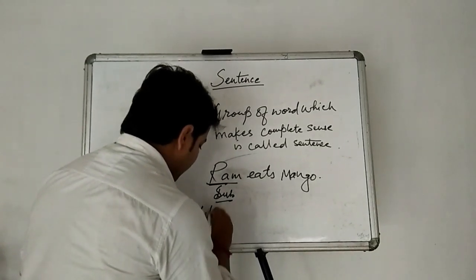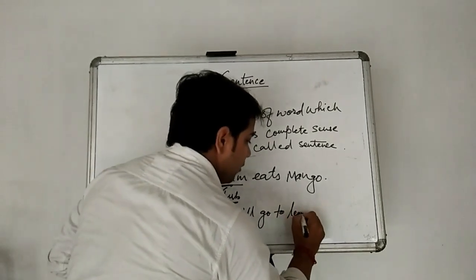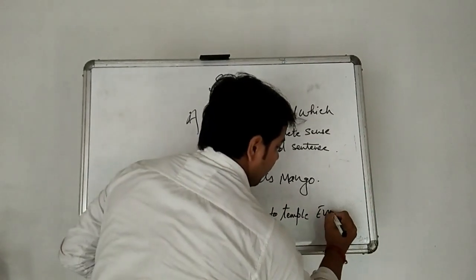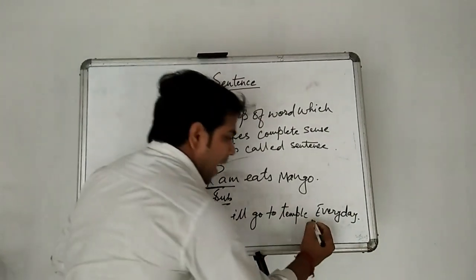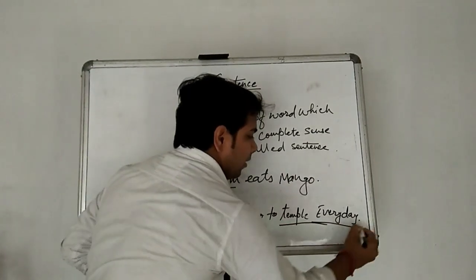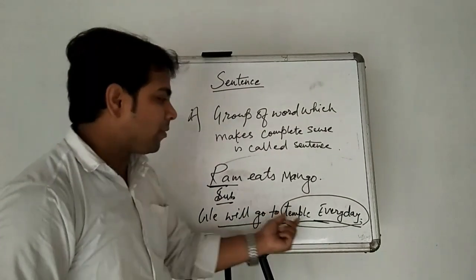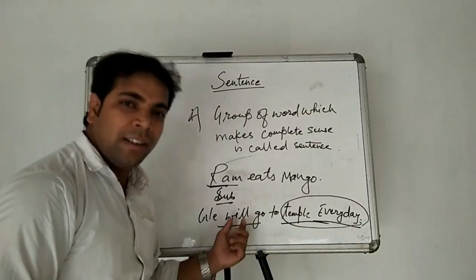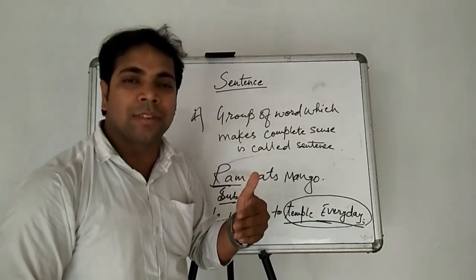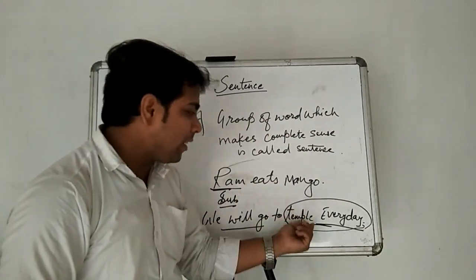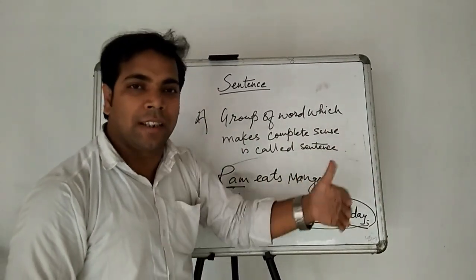But in some cases, the subject will come after the predicate. For example: We will go to temple every day. Here, 'every day' is the subject and 'we will go to temple' is the predicate. In this sentence we have seen that the subject came after the predicate. Usually subject comes before the predicate, but these are the exceptional cases.